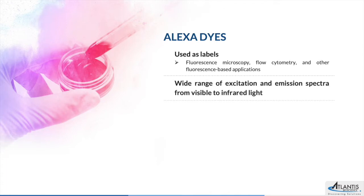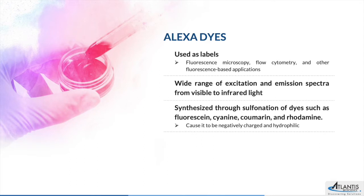The Alexa family covers a wide range of excitation and emission spectra from visible to infrared light. They are generally synthesized through sulfonation of dyes such as fluorescein, cyanine, coumarin and rhodamine, and this sulfonation makes them negatively charged and hydrophilic.